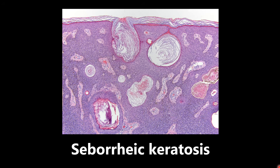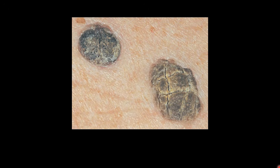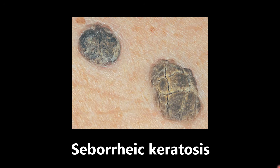This next one is an example of seborrheic keratosis. The important things to look at are these horn pseudocysts that are close to the surface — they really give away the diagnosis. The next picture is also seborrheic keratosis viewed from the surface on an actual patient. It has this classic stuck-on appearance. It resembles a wart and is non-cancerous. Seborrheic keratosis starts with S and K, and the word stuck also starts with S and K — that's how I remember it.